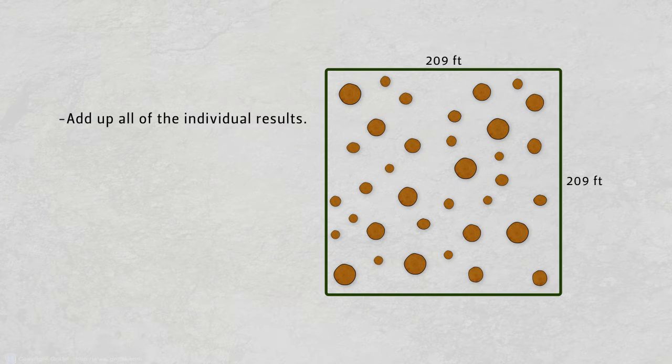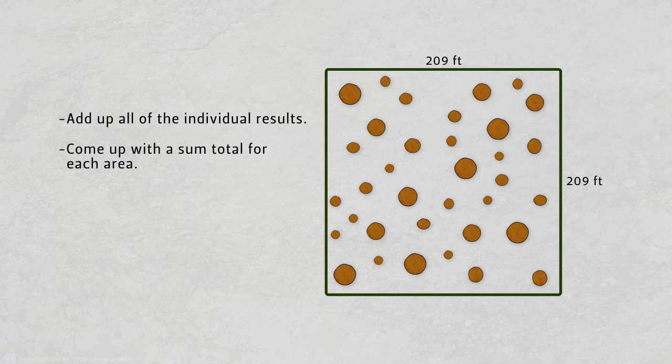We would add up all of those individual results for area equals pi r squared for each tree. We'd come up with a sum total for each area and express that total in square feet.